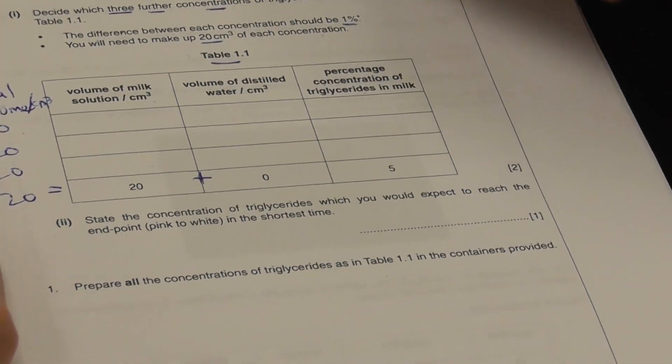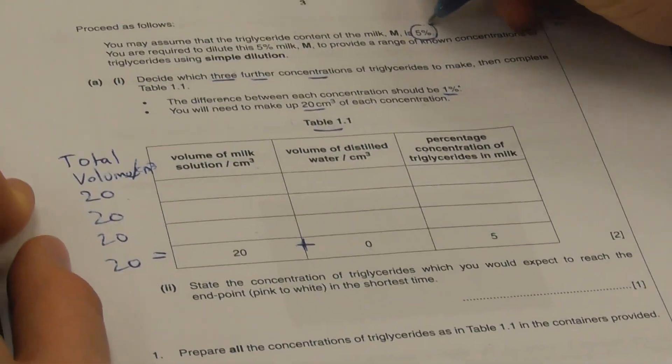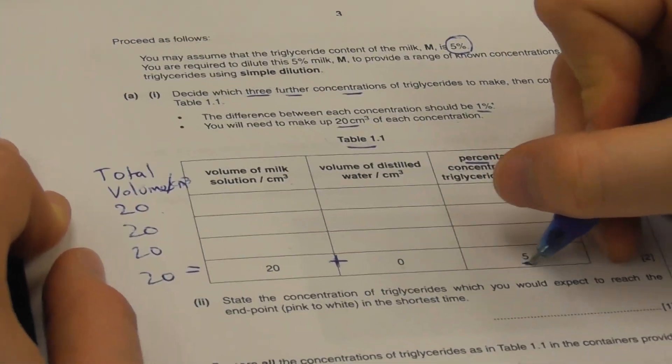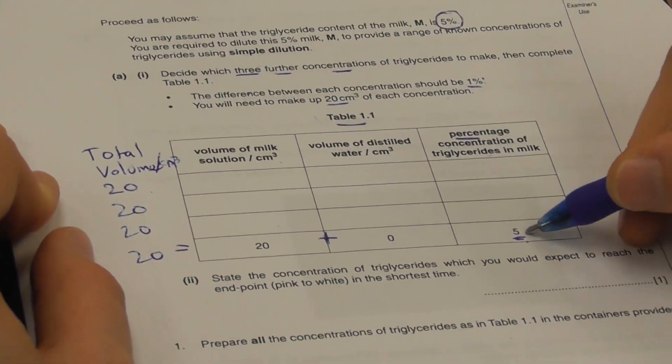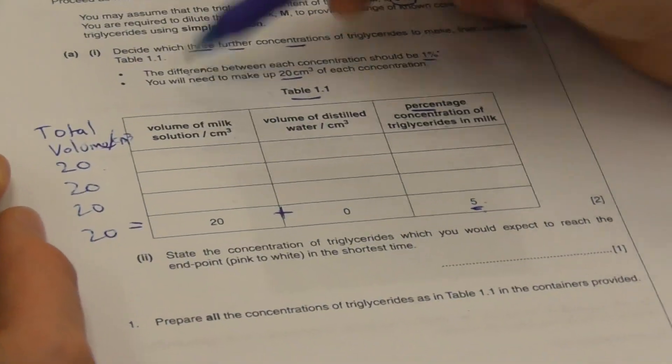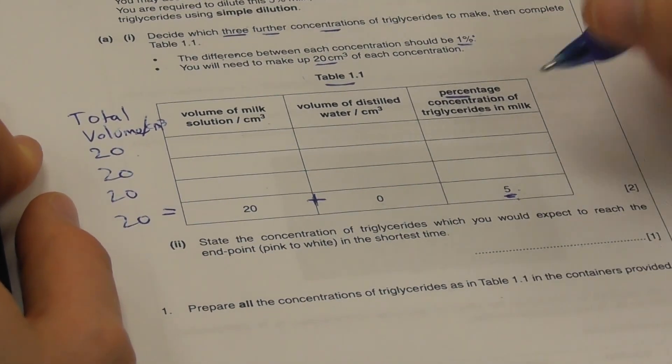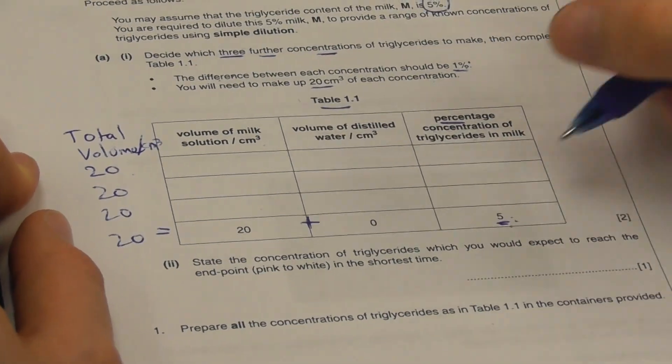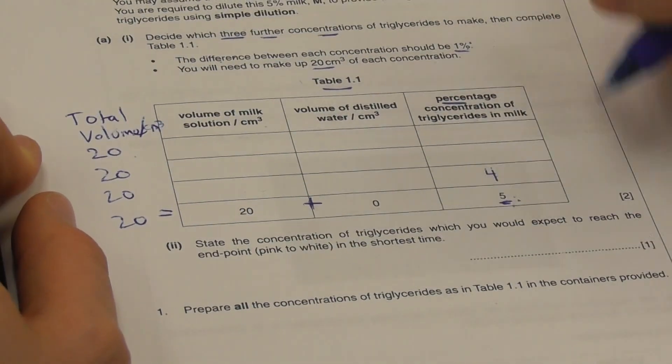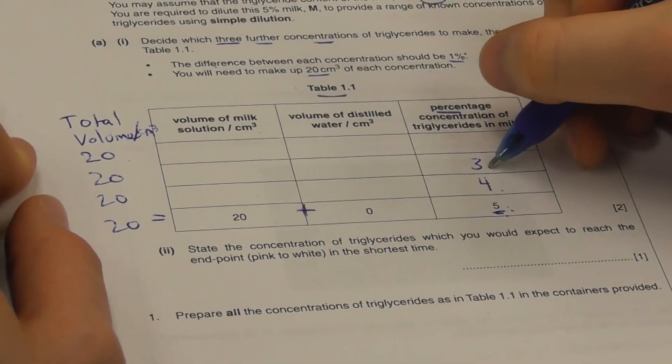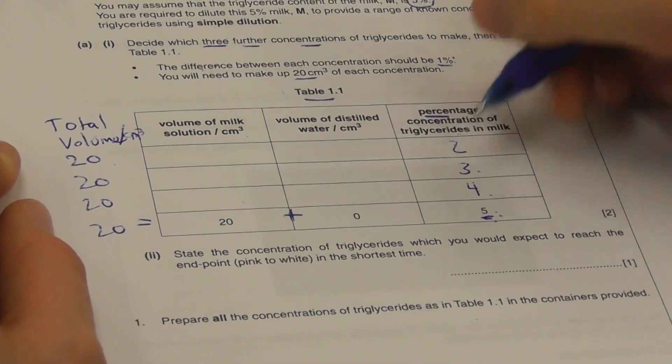We are starting at 5% over here. Percentage concentration, 5. We're starting at 5. The difference between each of our concentrations is going to be 1% each. So 5 minus 1 is 4. 4 minus 1 is 3. 3 minus 1 is 2.